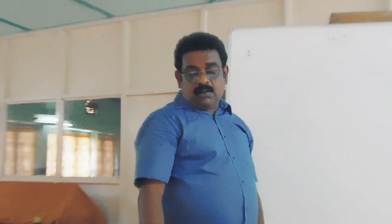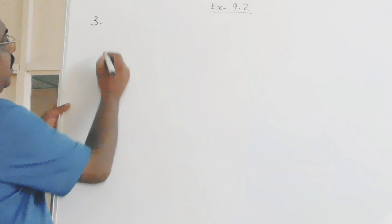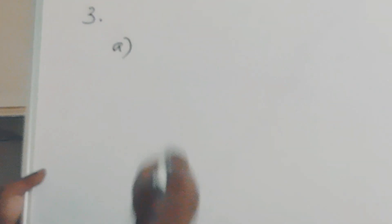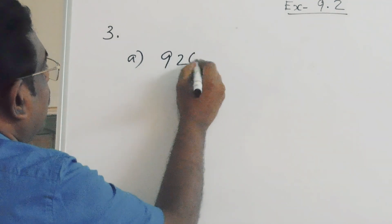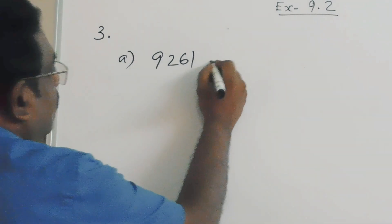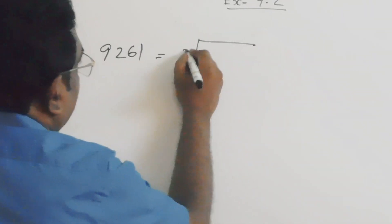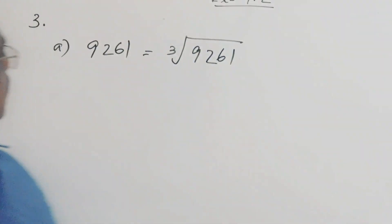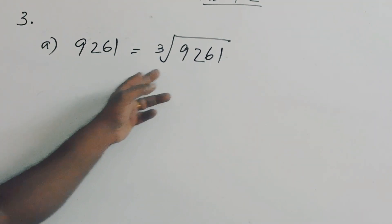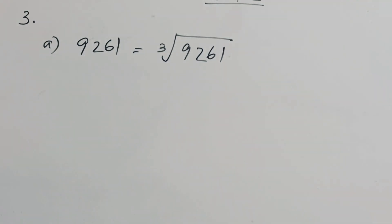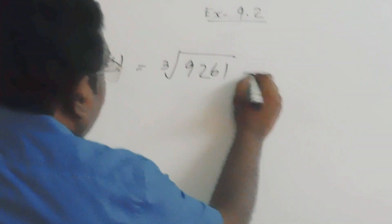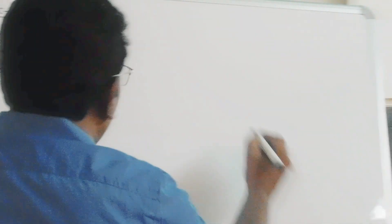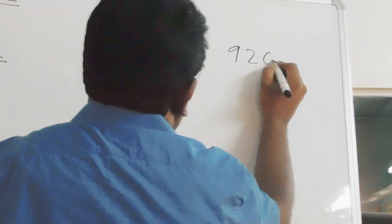Question number three. Calculate the cube root of the following numbers. Here, in question number a, we have 9,261. We have to write cube root of 9,261. For that, we have to do the prime factorization of 9,261.